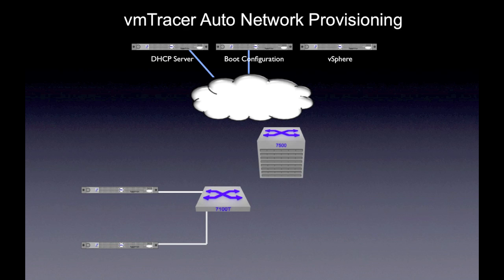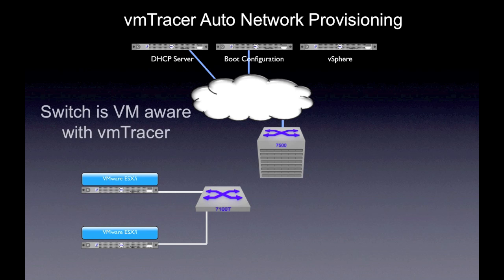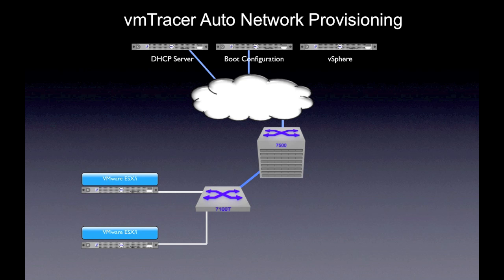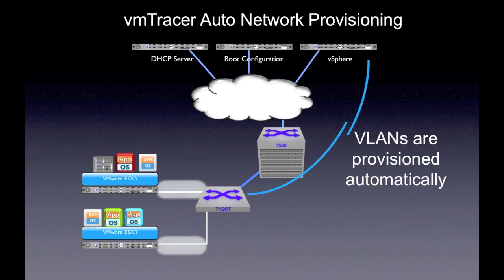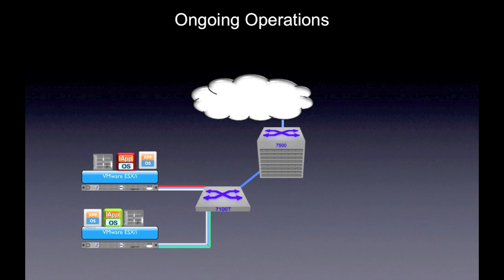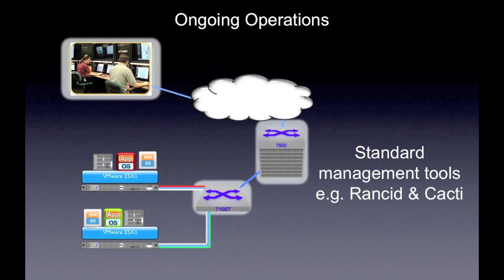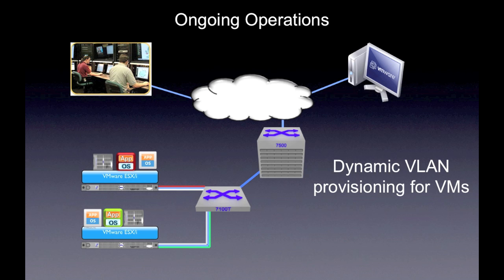VM Tracer can be one of the configuration parameters downloaded by ZTP. With VM Tracer, Arista switches can auto provision host connections to the network as VMs are installed and start to run on servers. For ongoing network management, Arista switches support common management tools. For VM provisioning and management, vSphere works in conjunction with VM Tracer for managing VMs and automating network provisioning tasks in the data center. The benefit is that you can use existing network tools to manage this infrastructure and automate the provisioning of it, making for a very seamless integration of Arista platforms into your cloud data center network.